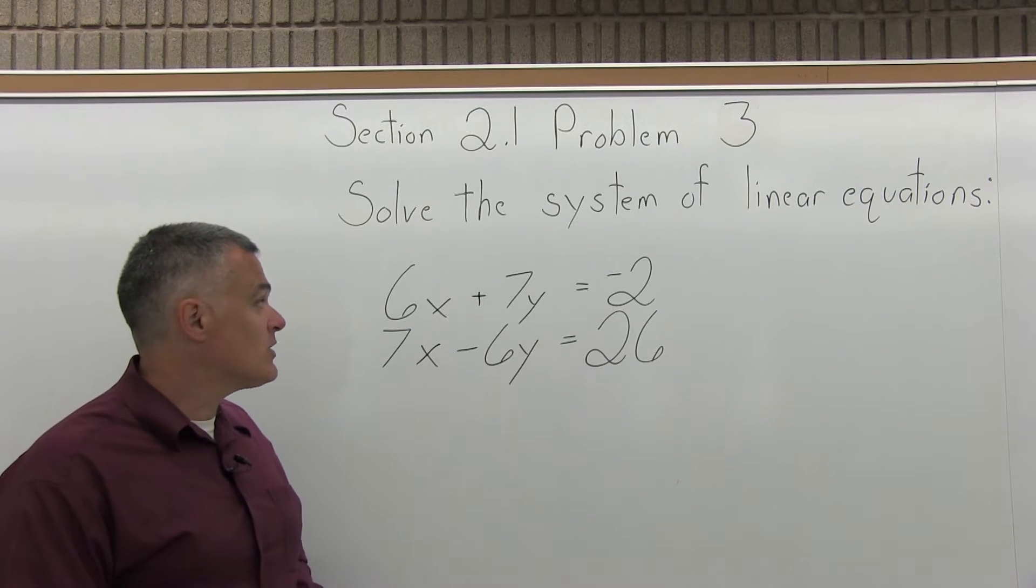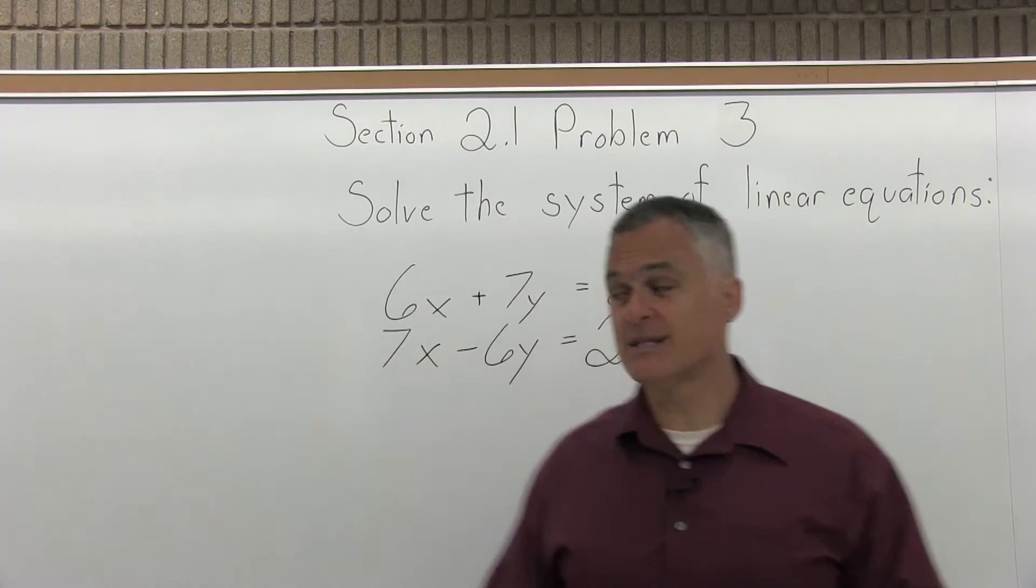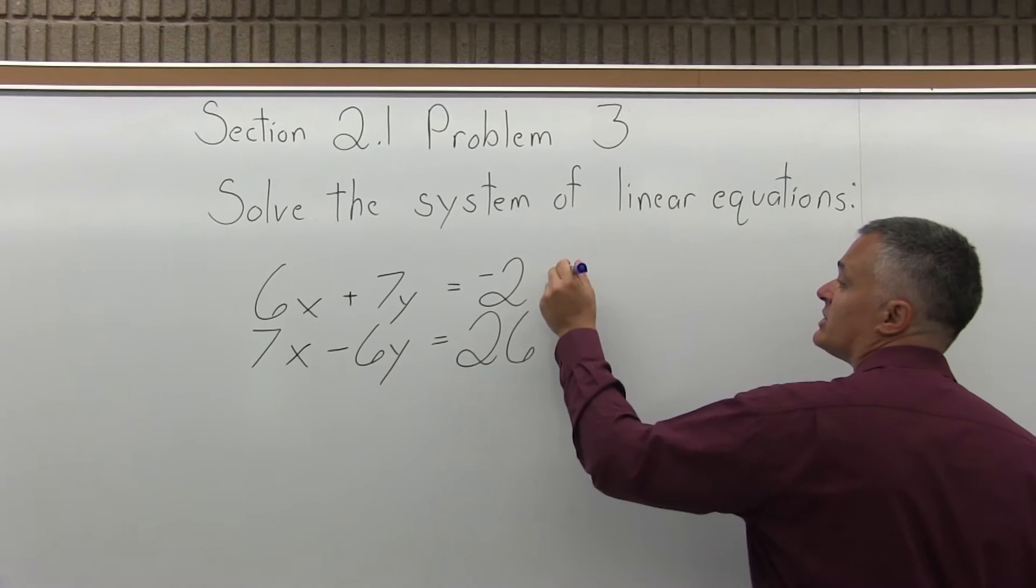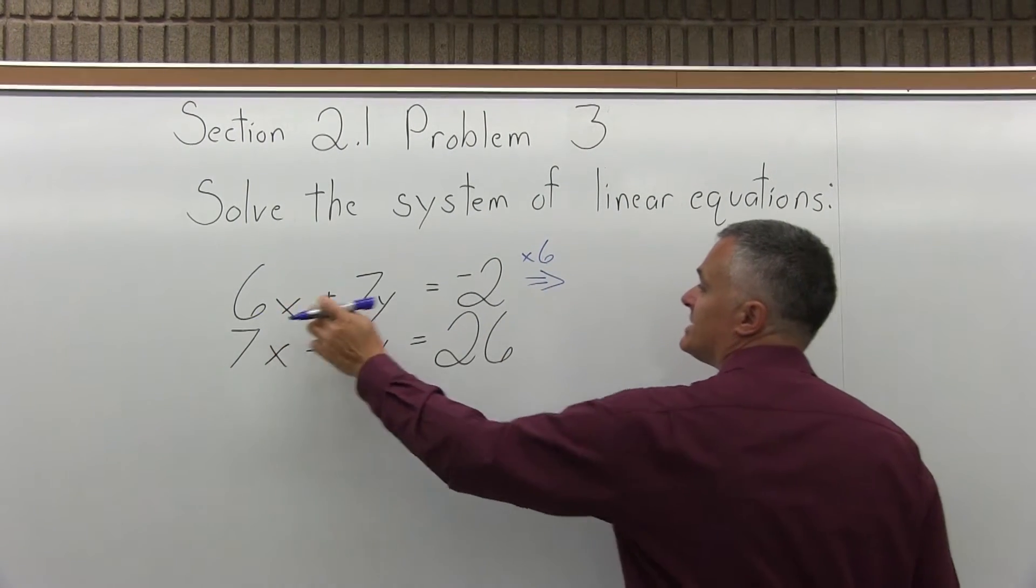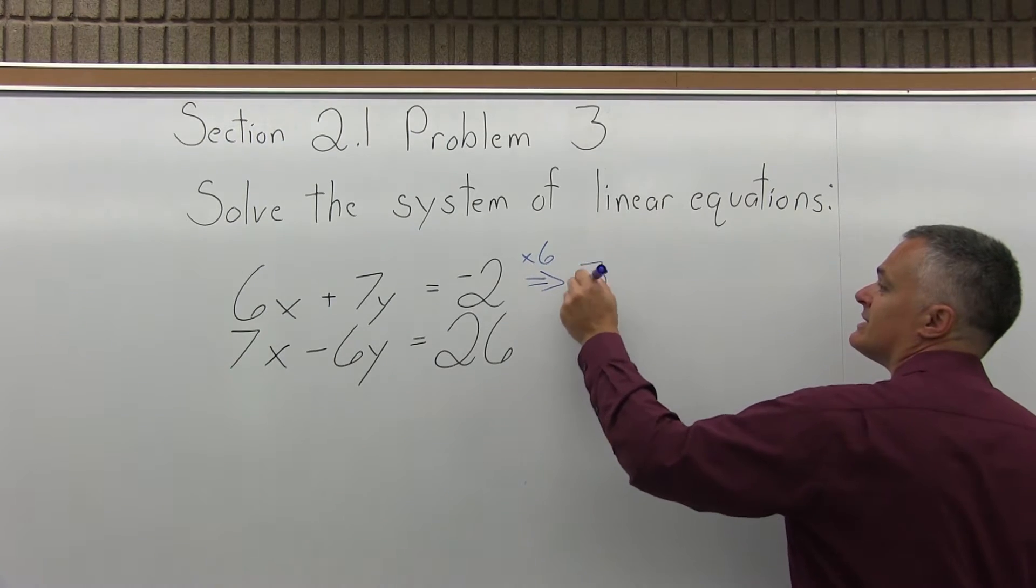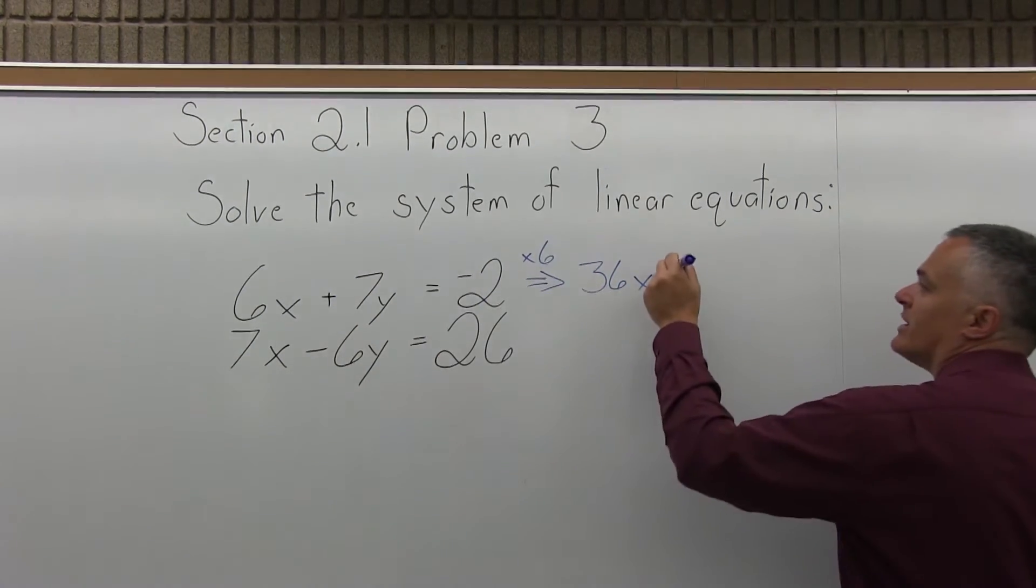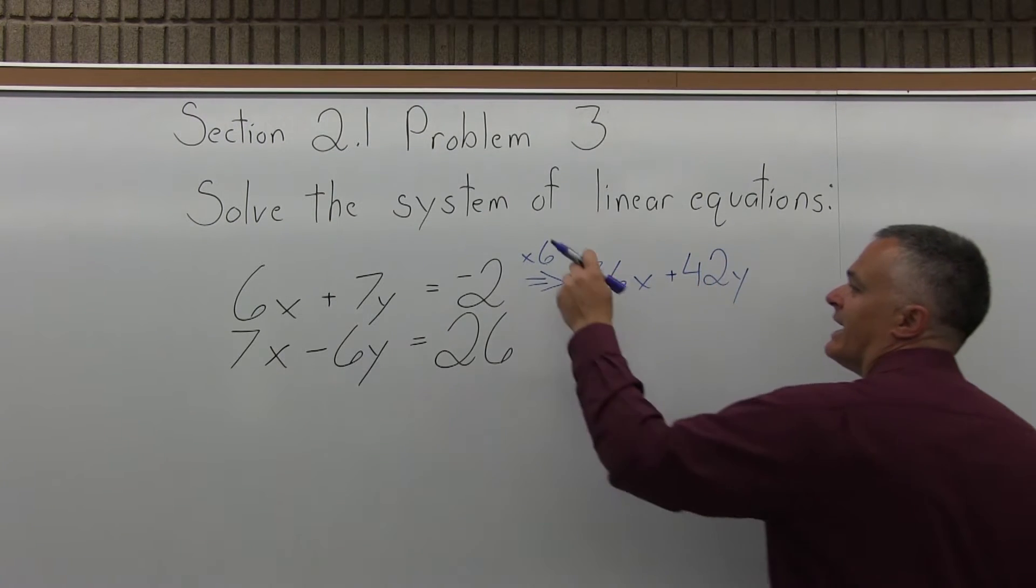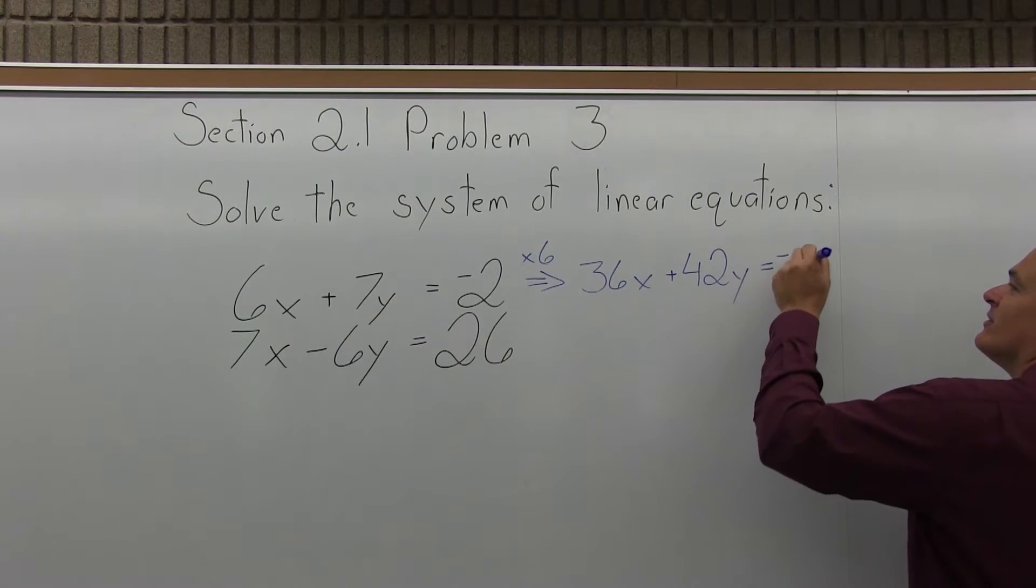If I want to make the top equation have a 42y, everything has to get multiplied times 6. So, the top equation, everything times 6. 6 times 6x is 36x. 6 times 7y is 42y. And 6 times negative 2 is negative 12.